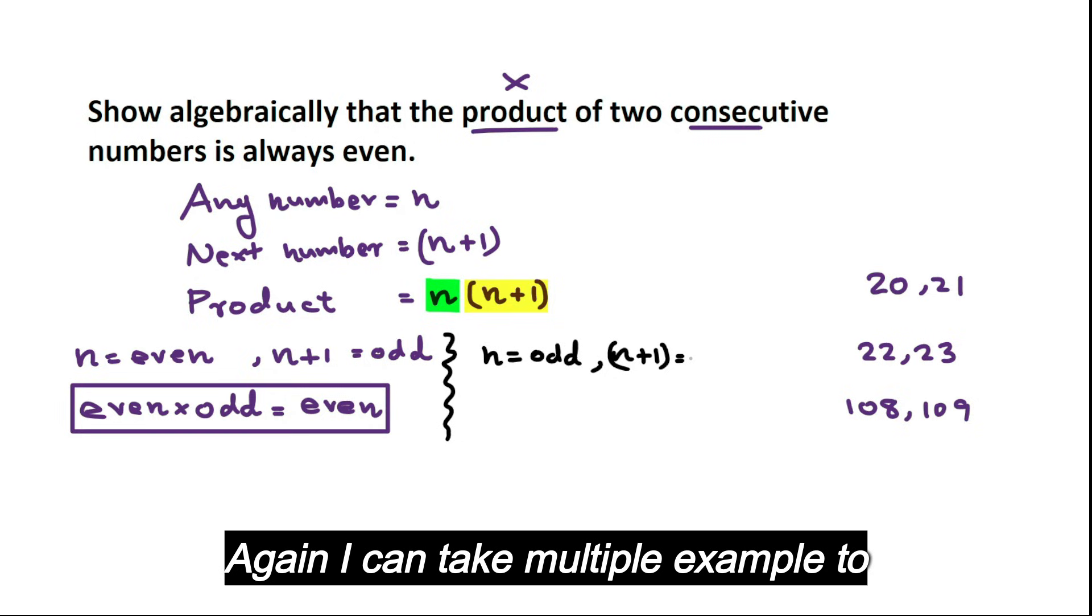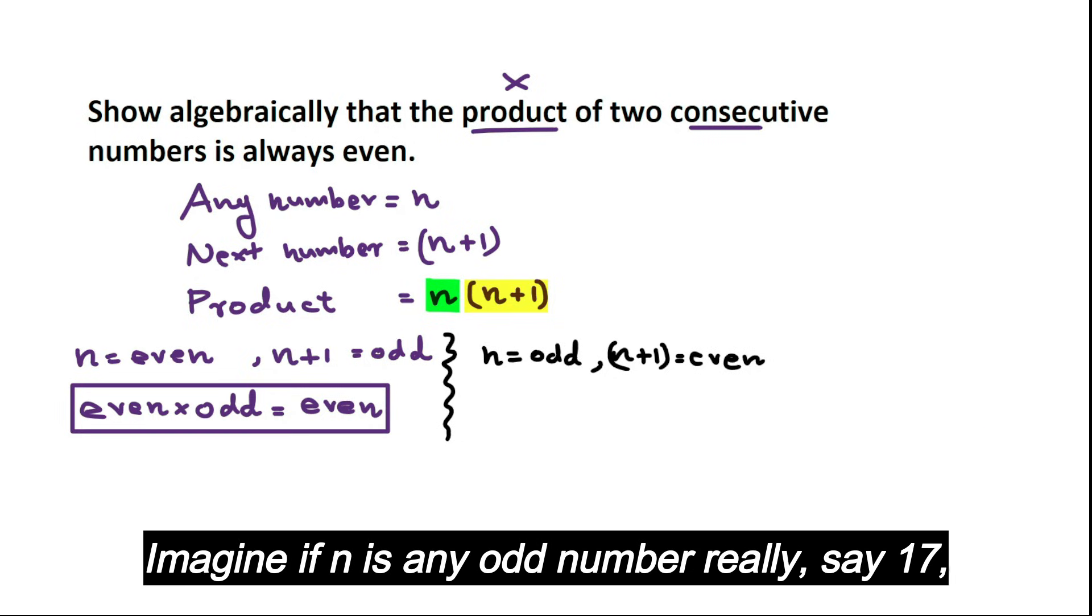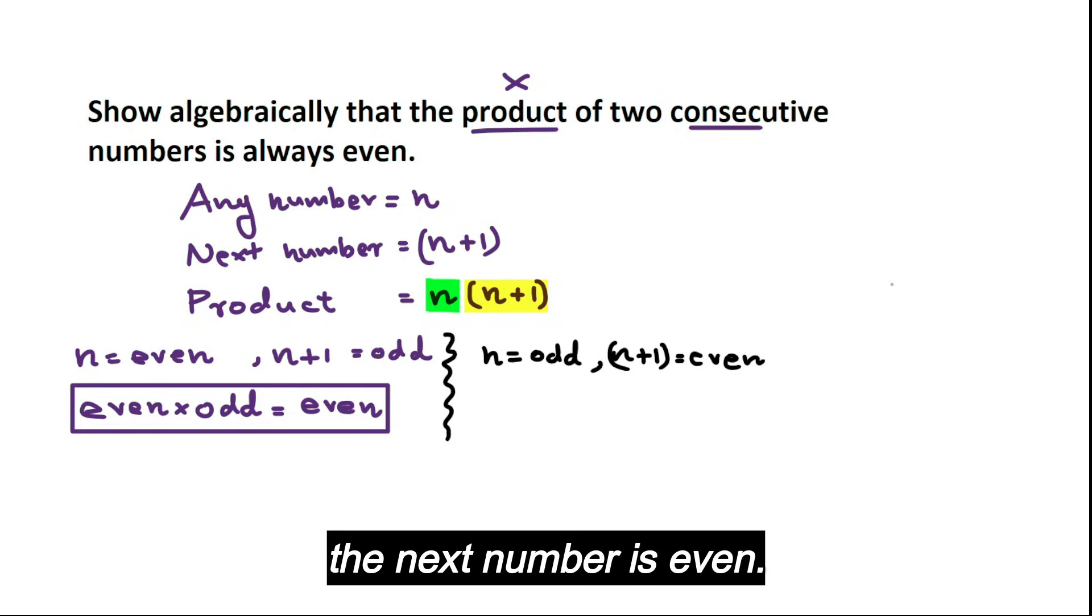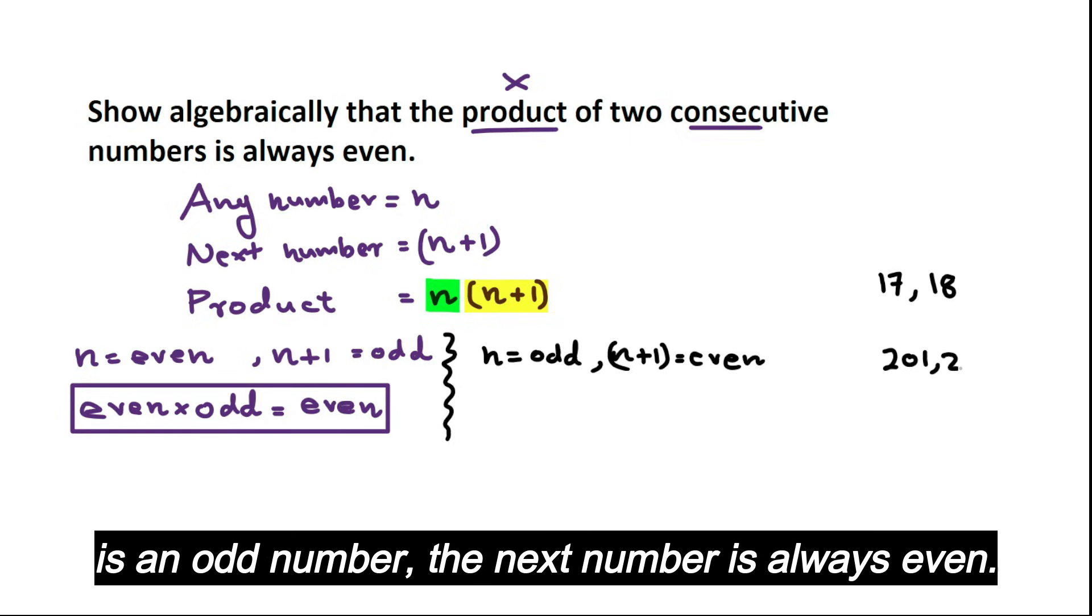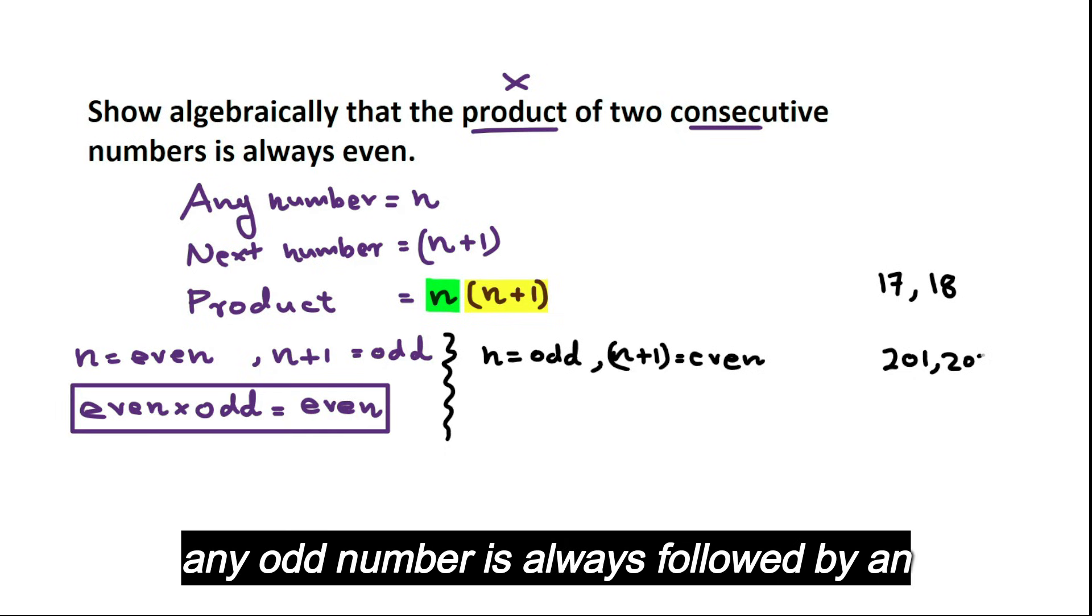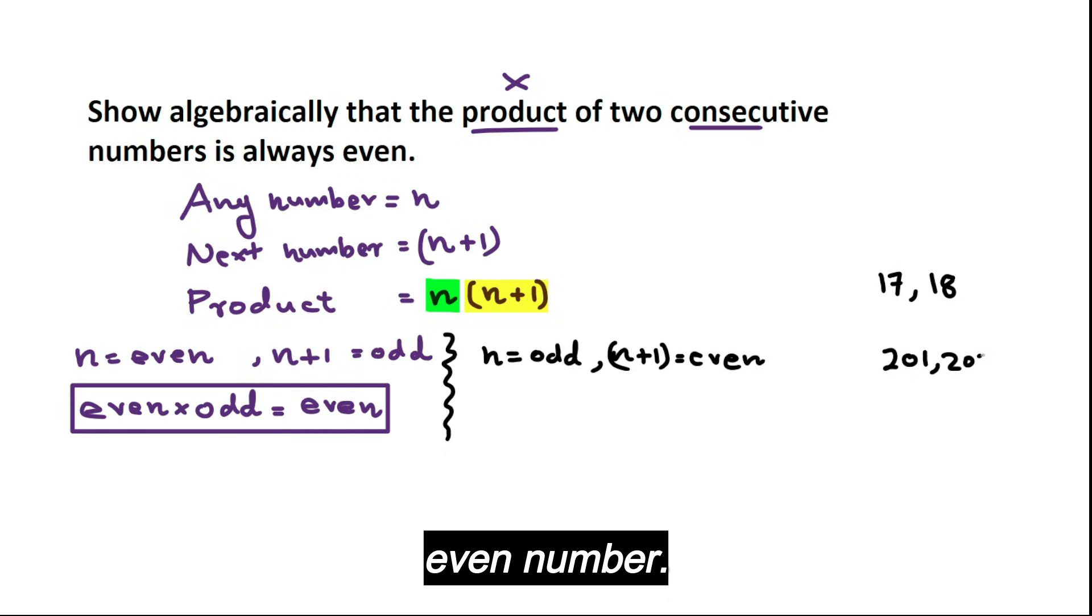Again, I can take multiple examples to understand it. Imagine if N is any odd number, really, say 17. Then the next number is even. 201 is an odd number. The next number is always even. So any odd number is always followed by an even number. So odd times even is also even.